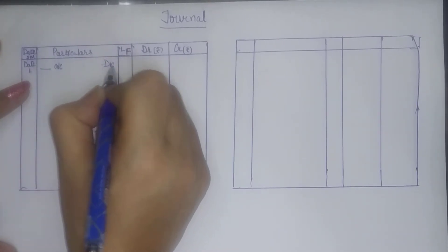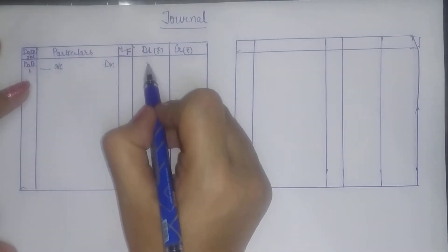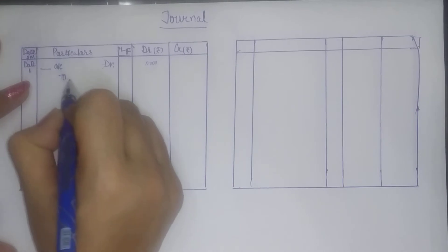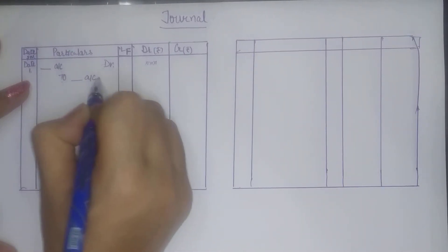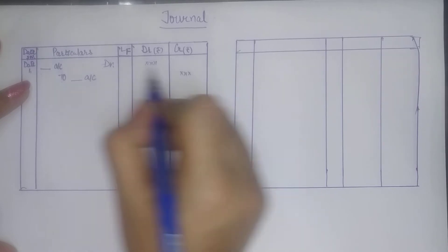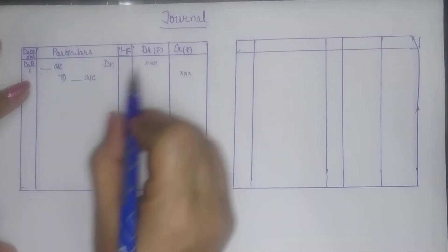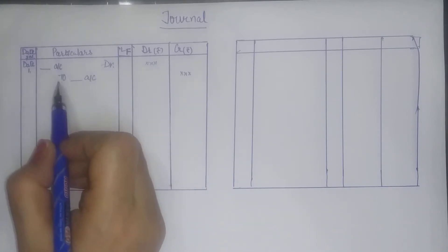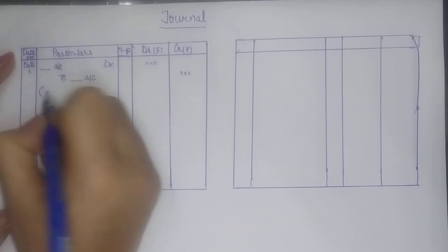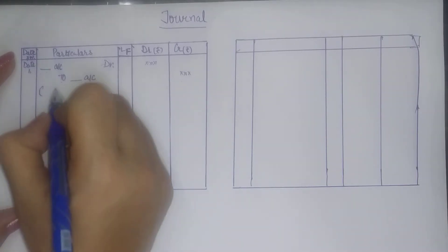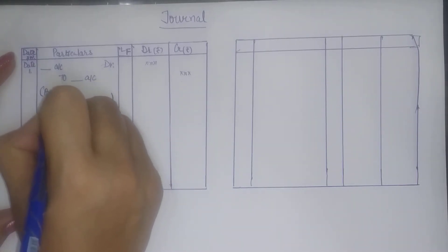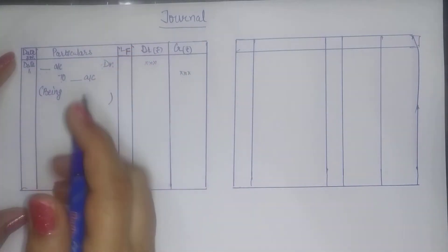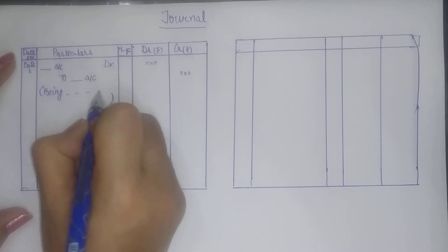Debit is written as DR to indicate the account is debited, and its amount is written in the debit column. The account that is to be credited is written with 'To' before it, and its amount is written in the credit column. So debit amount goes in debit, credit amount goes in credit. Debit comes on top, and 'To' is added with the credit account. And every transaction has its explanation, which we call narration. Narration is the explanation — we write the transaction briefly.